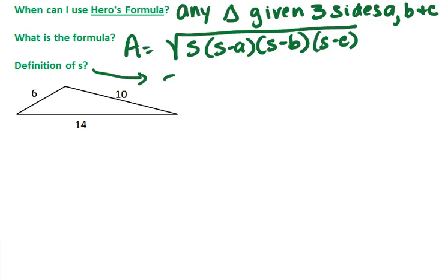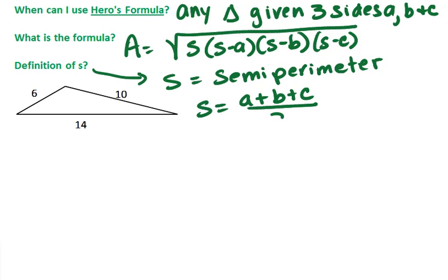What is S? Semi-perimeter. So as the term sounds, it is half of the perimeter. So for a triangle, we would add A, B, and C, divide by 2.